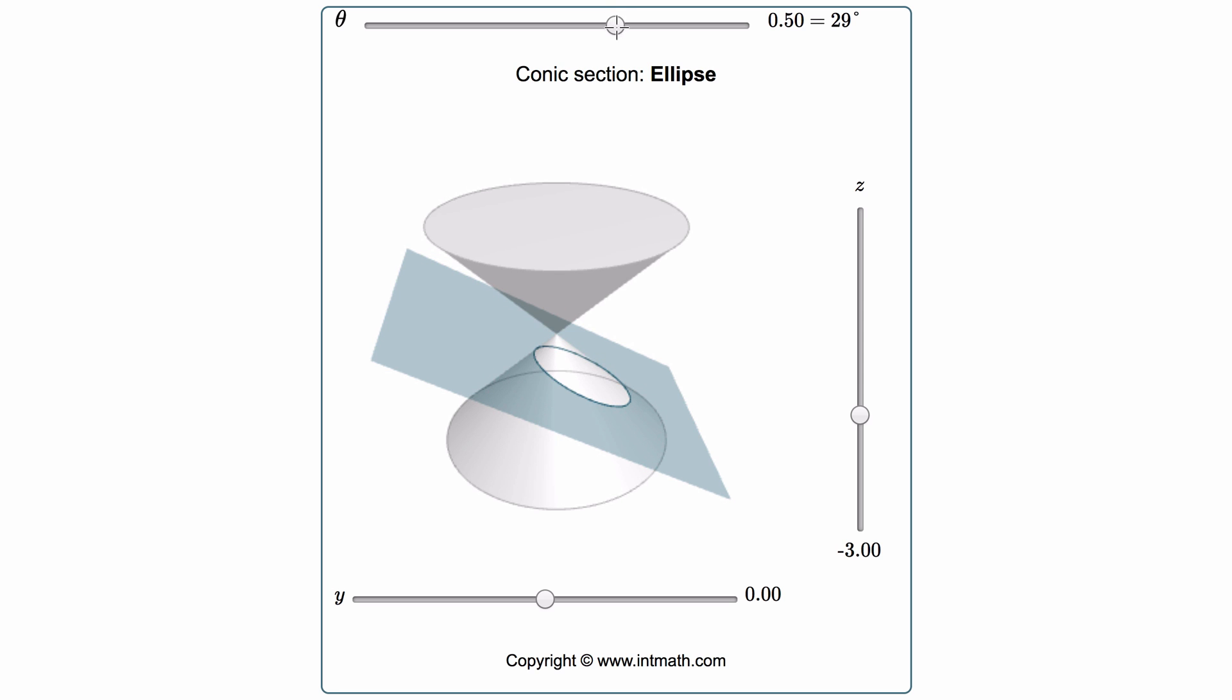If it intersects at an angle of zero degrees, meaning it's perpendicular to the axis of the cone, we get a circle. A circle is just a special case of an ellipse.